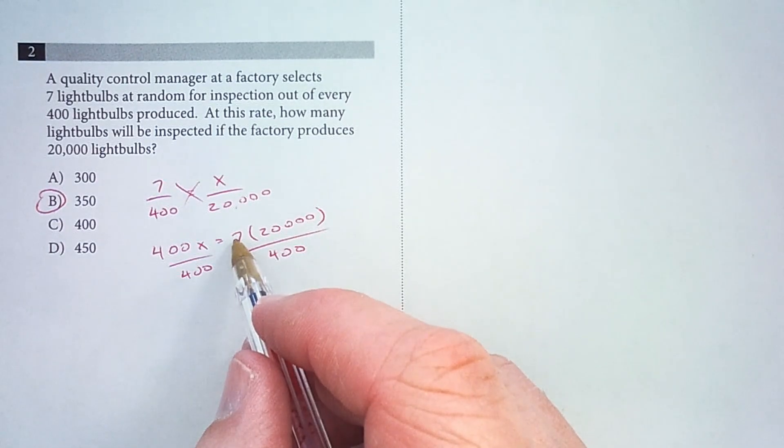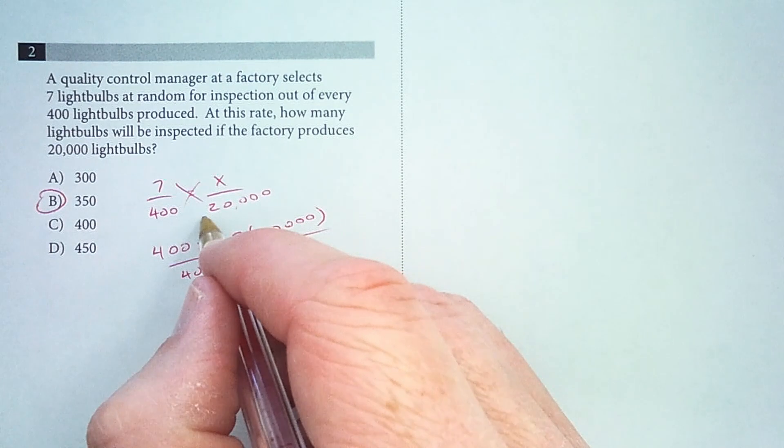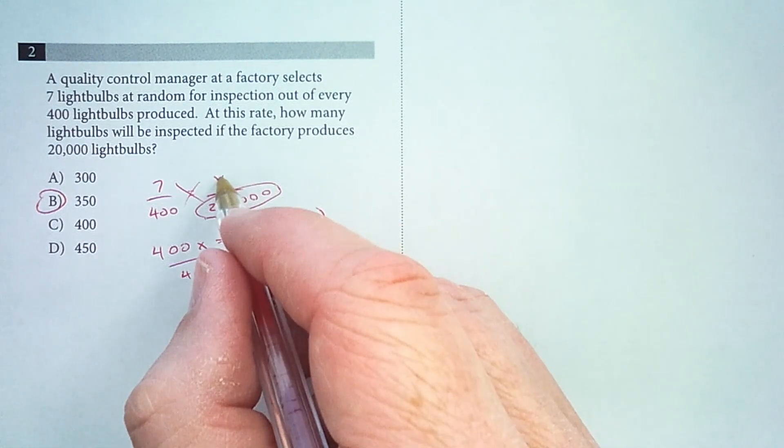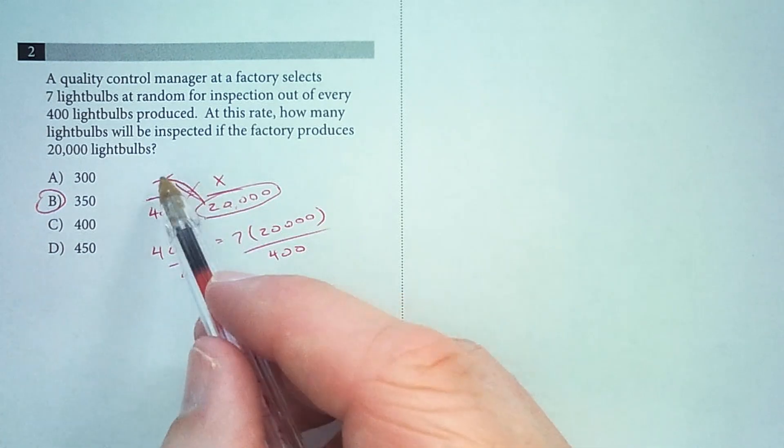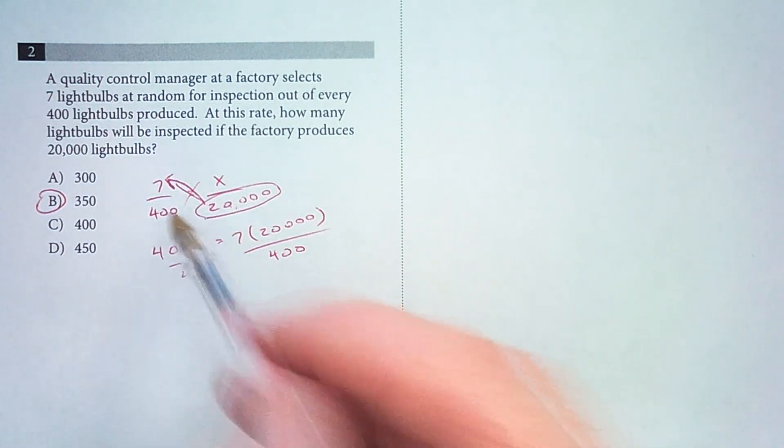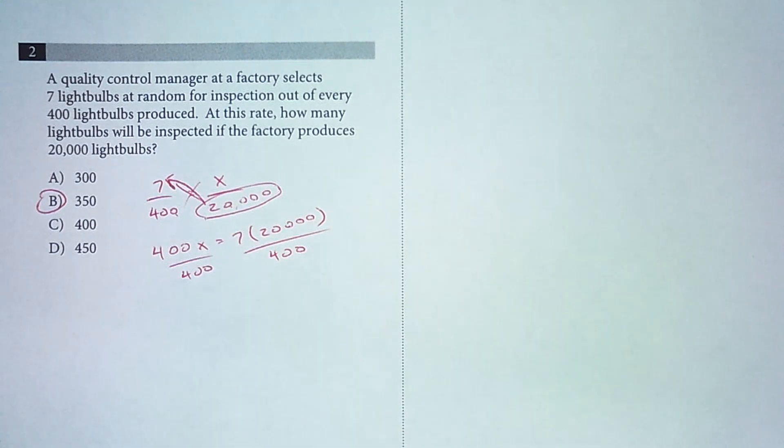Now to make this process shorter, once I've written my proportion I can always just take this number on the bottom underneath the variable and multiply it across. So I would do 20,000 times seven divided by 400, which is exactly the same as we did here. It was just a step that we didn't have to write down.